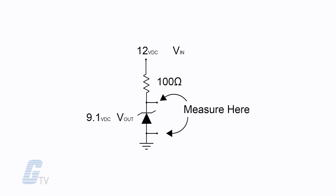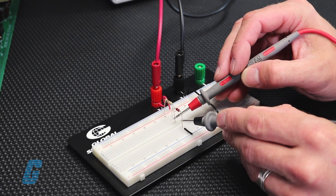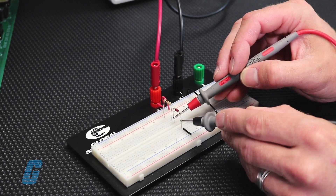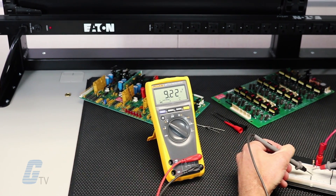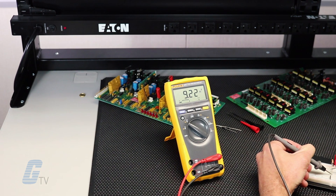Assemble the circuit and measure the Zener voltage. If the voltage measured matches the Zener diode's rated voltage, the diode is okay.